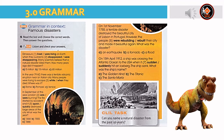Unit 3 Grammar in Context: Famous Disasters, Exercise 6. Dinosaurs were living on Earth when they suddenly disappeared. Many scientists believe that a natural disaster killed them. How many years ago did it happen? The answer is C — it happened 65 million years ago.